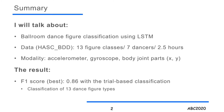The modalities are acceleration, angular velocity, and body parts coordinates. And as a result, we've obtained an F1 score of 0.86 with the trial-based classification of 13 dance figure types.